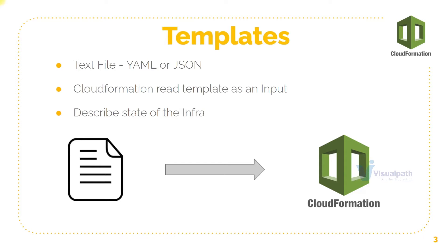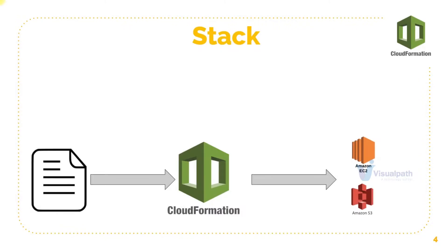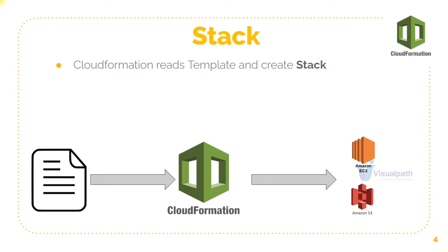If you're comfortable with JSON, you can go with JSON. If you're comfortable with YAML, you can go with YAML. I recommend YAML because it's much easier to read and write. What a template does is it creates and maintains the stack. So if you want to create or maintain any resource on AWS, you write a template file and CloudFormation will read that and create a stack for you.